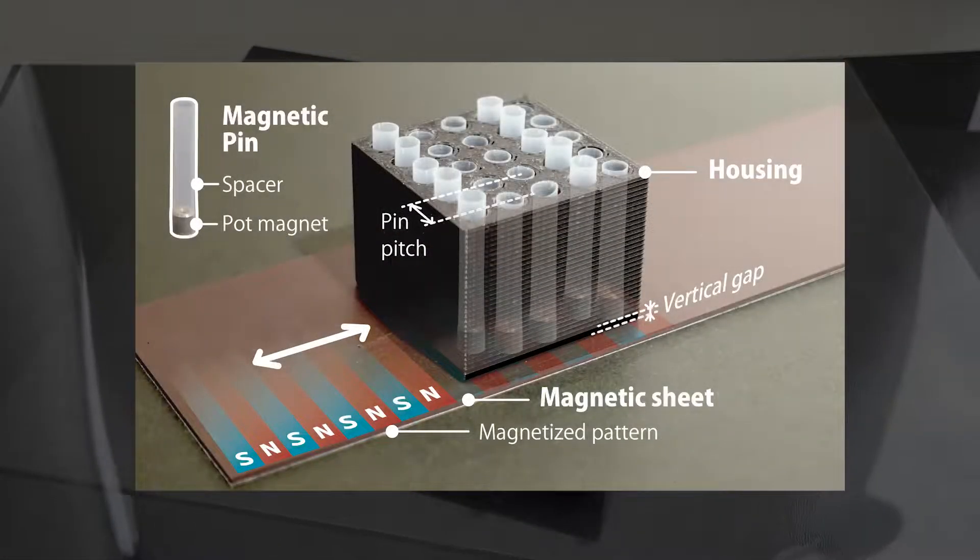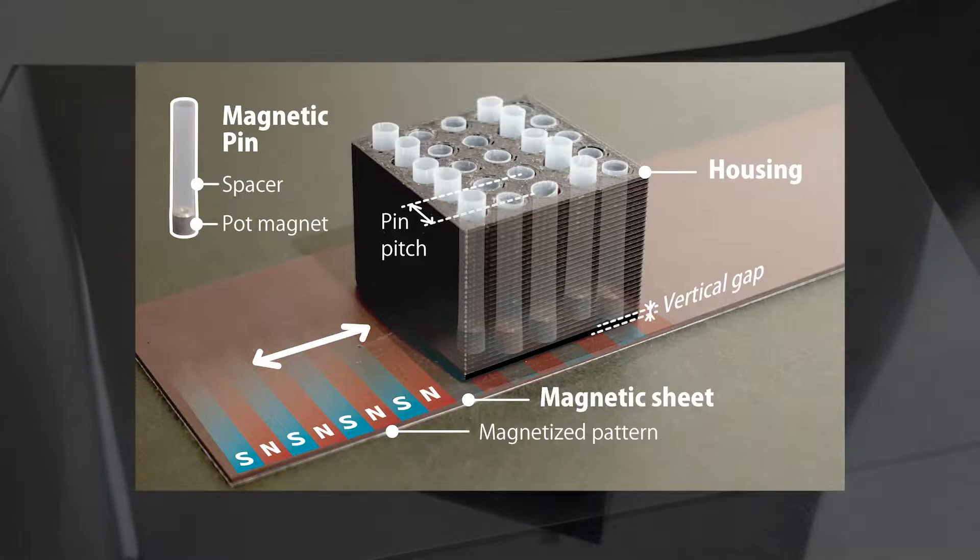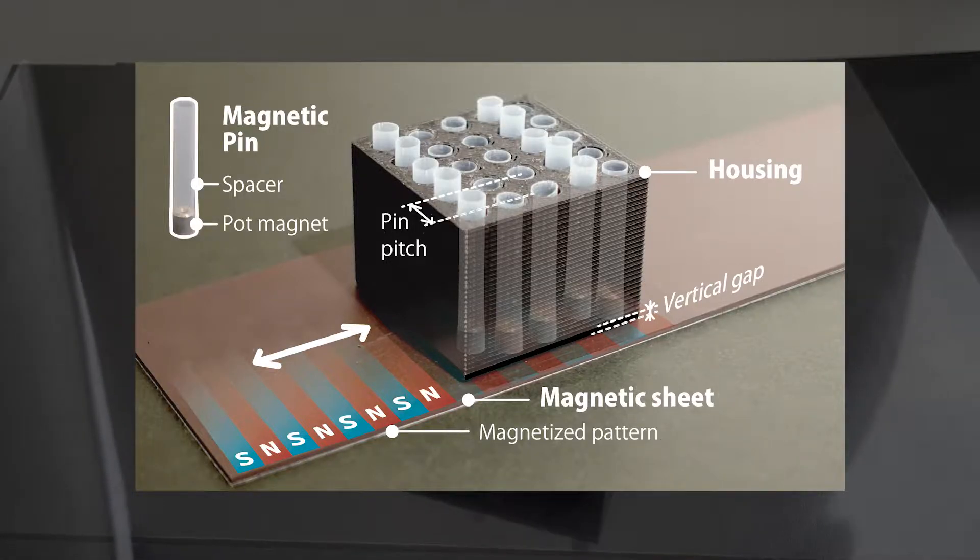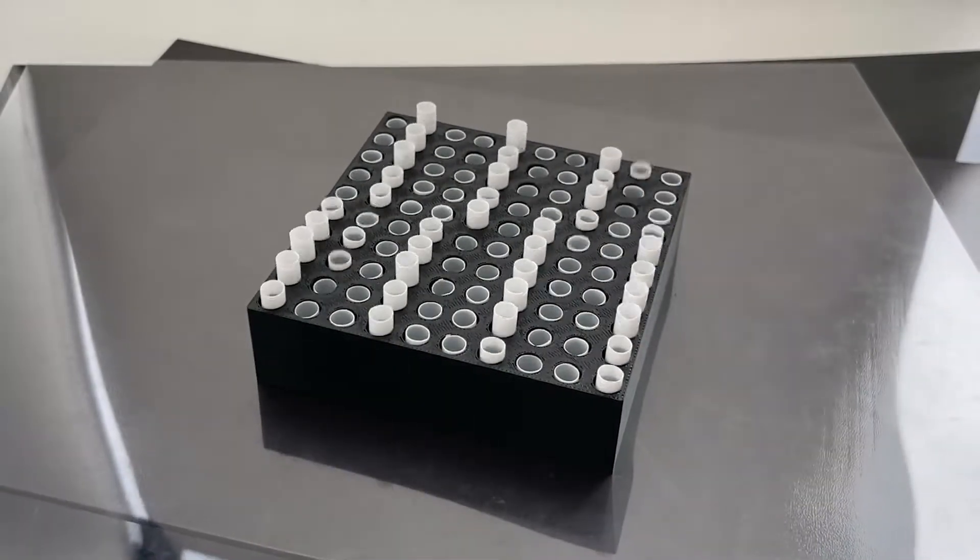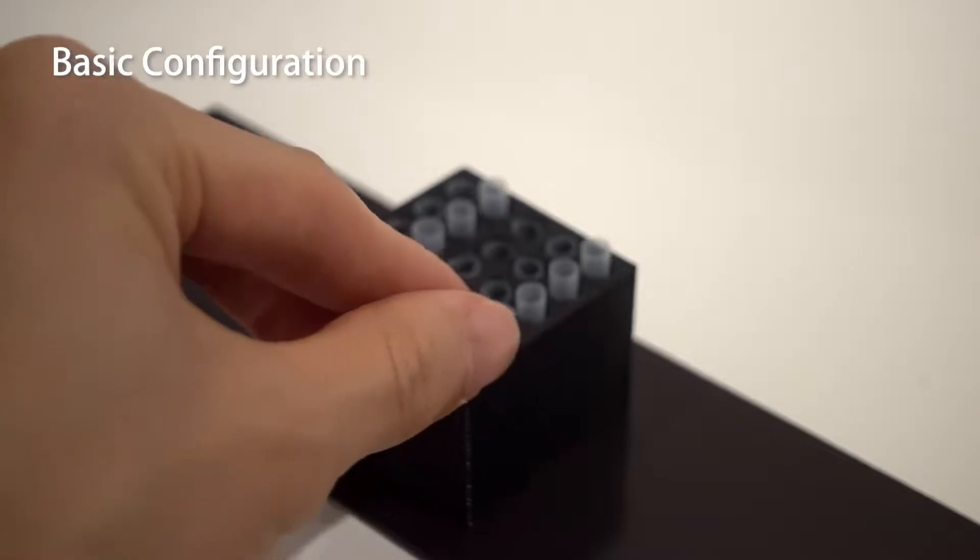The display consists of magnetic pins in an array housing with a magnetic rubber sheet underneath it. By moving the magnetic rubber sheet, which has a specific magnetic pattern on it, the magnetic repulsive and attractive forces actuate the pins vertically.